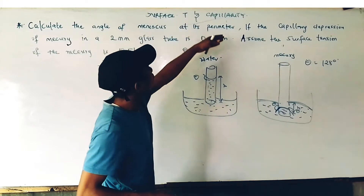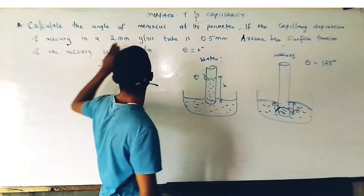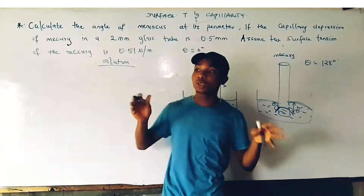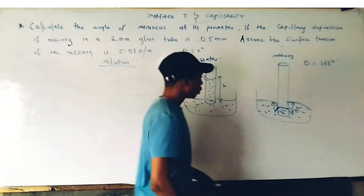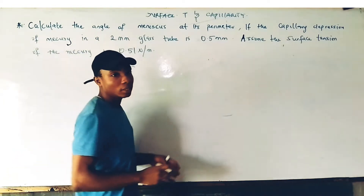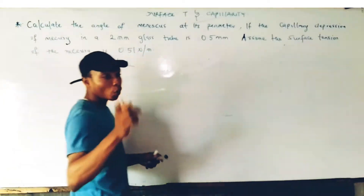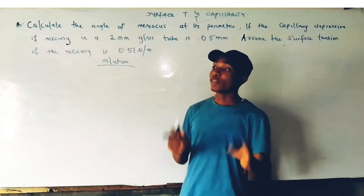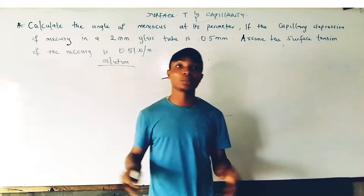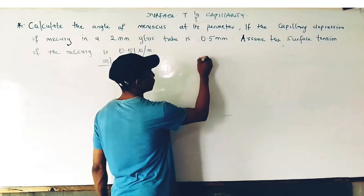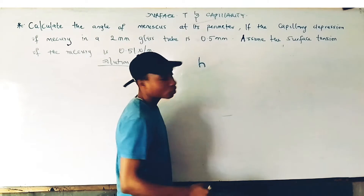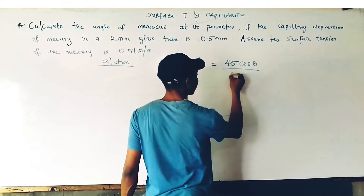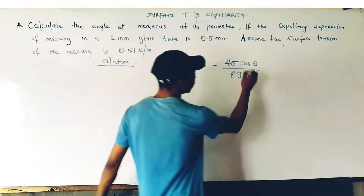In this problem, we have to find the angle of the meniscus at contact for the capillary depression of mercury in a 2mm glass tube of 0.5mm, with surface tension 0.5 N/m. The standard formula for capillary problems is: H equals 4 times surface tension times cosine theta, divided by density times acceleration due to gravity times diameter.